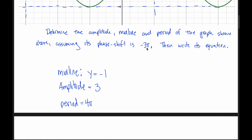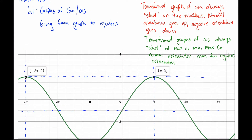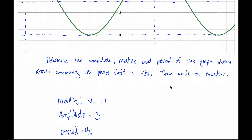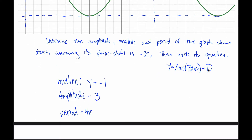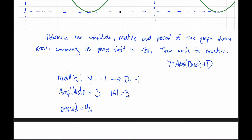I have all four vocabulary words: amplitude, midline, period, and the given phase shift. Using those, I can come up with the equation. Because we're starting at a maximum, we know we'll use cosine. So the final answer is y = a·cos(bx + c) + d for some numbers a, b, c, and d. The easiest to figure out is d: the midline y = negative 1 immediately tells me d = negative 1. Next, the amplitude is 3 and that equals the absolute value of a, so |a| = 3. Since I'm starting at the top — normal orientation — a is the positive value, so a = 3.